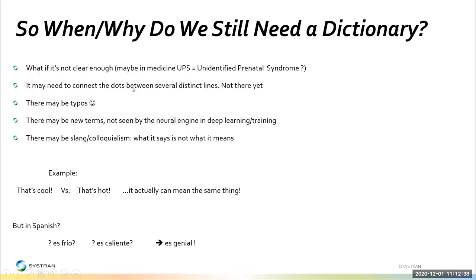It may not all be easy — you may need to connect the dots even beyond different lines. Different chapters may contain additional clues. We're not there yet. We're translating mostly one or two, maybe three sentences at a time. Even back in the rule-based engines, we could see two or three sentences earlier to deduce the gender or subject and object. There may also be typos — we're all humans, and even robots will make typos. There may also be new terms that have never been seen before, like a kid who never heard of rocket science until they see something launch and land.